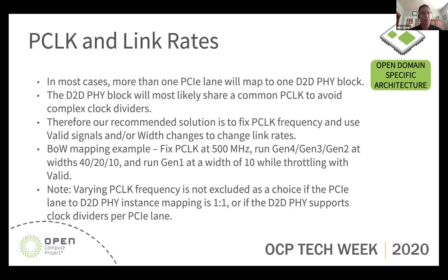On link rates: generally the D-to-D PHY is going to want a common P-clock across that block. Our recommendation is a fixed P-clock frequency using valid signals or width changes to throttle link rates per PCI lane. For example, on a BOW interface — picking a P-clock rate of 500 MHz — we could run Gen 4 as our normal operating rate, then for Gen 3, 2, and 1, reduce the link widths, with Gen 1 running at the lowest link width with the valid signal. This prevents having to change the P-clock rate. You can change the rate, but that adds complexity with clock dividers and so forth.